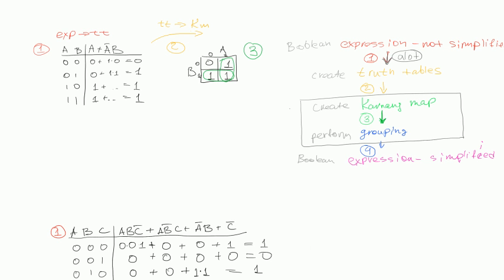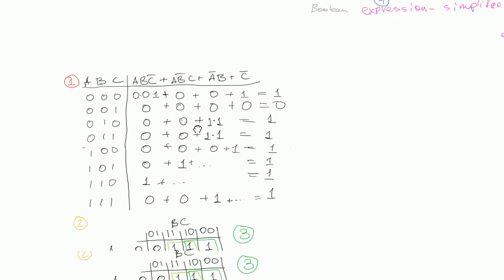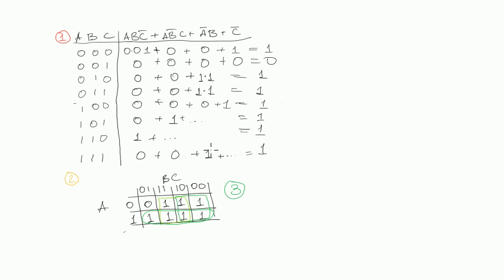In the last video, we practiced a lot of performing grouping — that is step 3. We had a Karnaugh map and we performed grouping on it. We did it on several examples, like on this one, and this one, and some others as well.